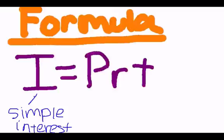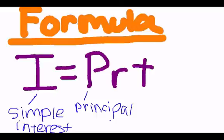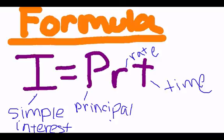The formula for finding simple interest is I equals PRT. The I stands for simple interest, P stands for principal, R stands for rate, and T stands for time.